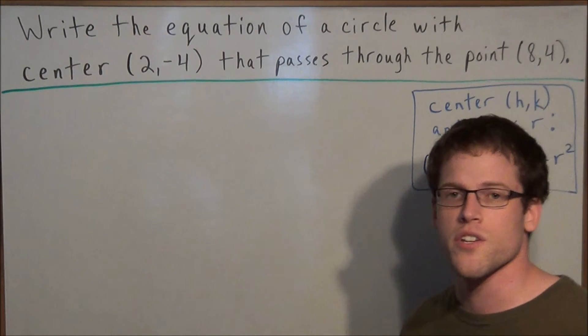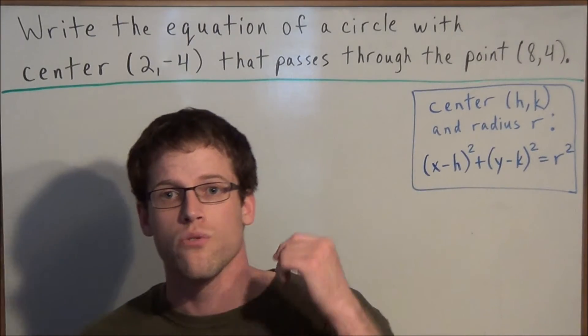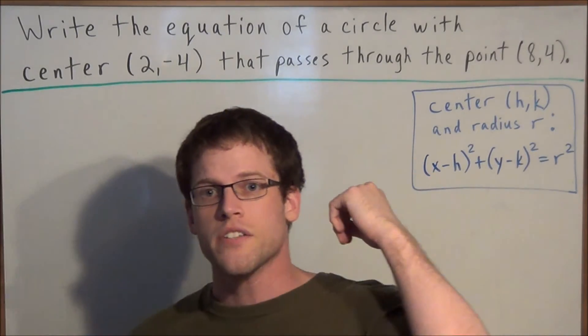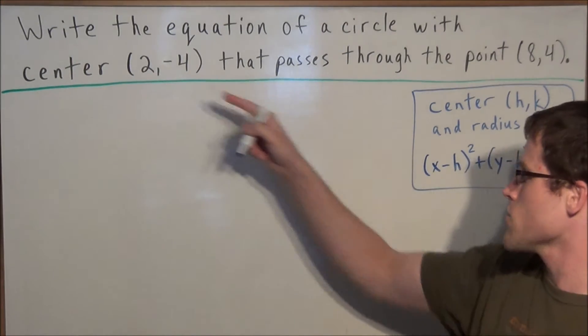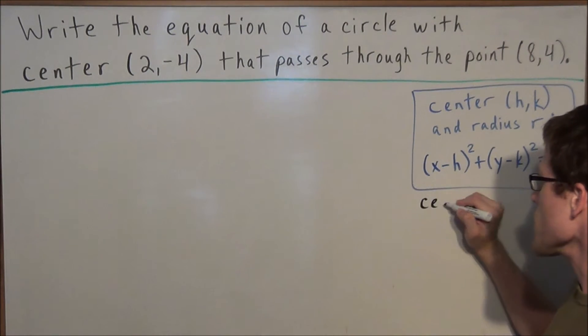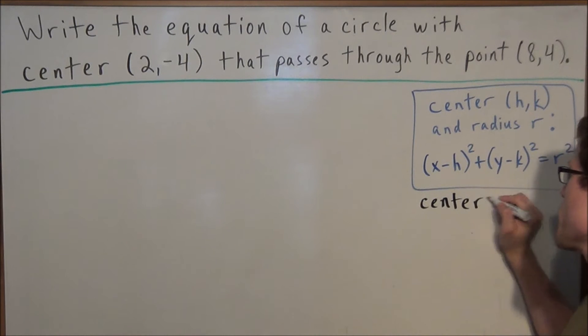So when you're writing the equation of a circle you need two things. You need the center of the circle and you need to know the radius of the circle. So notice right away in the problem they told us that the center of this circle is 2, negative 4.